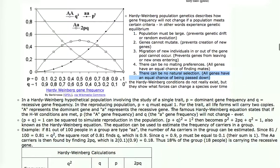In a Hardy-Weinberg hypothetical population involving the study of a single trait, P represents the dominant gene frequency, and Q represents the recessive gene frequency. In the population, the sum of P and Q must be one. For the trait, all life forms will carry two copies of the gene. In every reproduction, an embryo is going to either get two big A's, a big A and a little a, or two little a's. The Hardy-Weinberg equation is P squared plus 2PQ plus Q squared equals one.